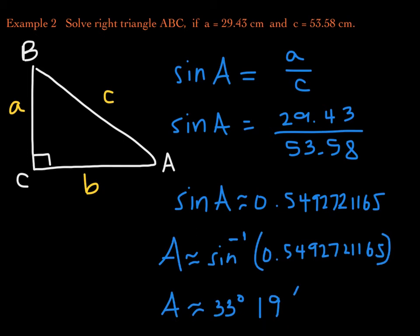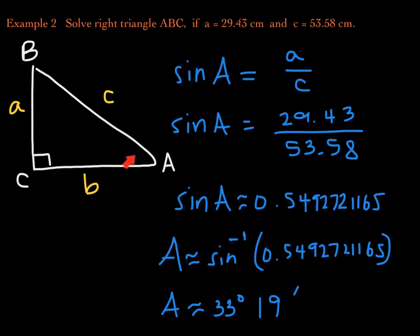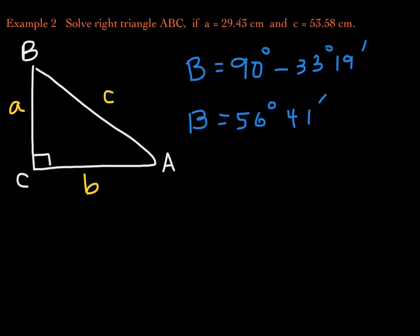We still need angle B. Because angles A and B are complements, we can just subtract angle A from 90 degrees, which is less arithmetic than subtracting both angle C and angle A from 180 degrees. Therefore, we find angle B to be approximately 56 degrees and 41 minutes.